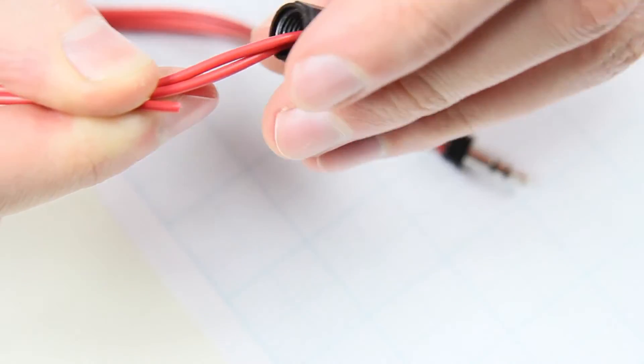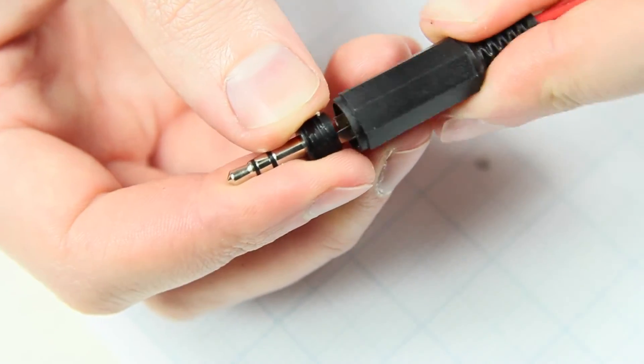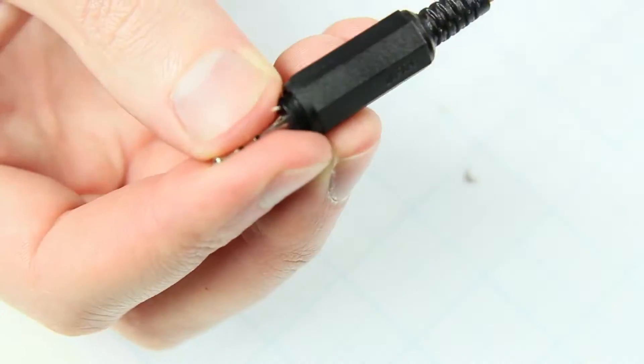The most important step at this point before continuing is applying the jack cover and additionally some heat shrinking tubes to bundle the cables.